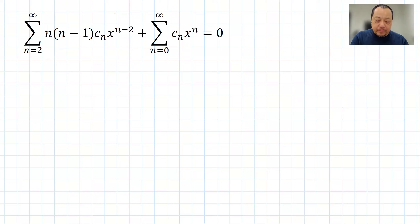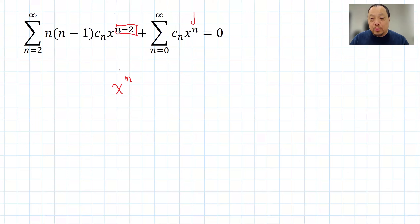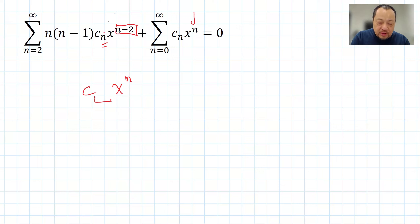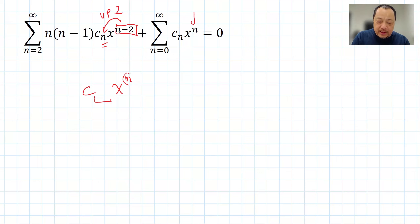Here's the short way. I want this power to look the same as that power — I want the n minus 2 to become a new n. I want the power of x to be written as x to the power n, where n is a new dummy variable. So I just rename the power as n. Now, what happens to the rest of the series? There's a factor c. It used to be c subscript n using the old n. In terms of the new n, since the old subscript was two more than the exponent n minus 2, it should still be two more than the exponent. The new exponent is n, so the subscript of c should now be n plus 2.